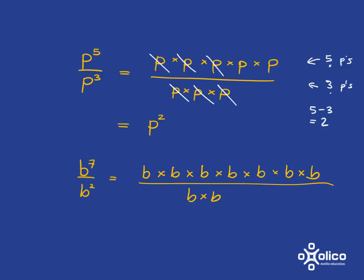Let's look at another example. If we had b to the 7 over b squared, what you've got here is at the top, you've got 7 b's multiplied together, and at the bottom, you've got 2 b's multiplied together. And what's going to happen is that these 2 b's at the bottom will take out 2 of the b's at the top. So what you're going to be left with is just 7 minus 2, which is 5 b's multiplied together, which is b to the power of 5.